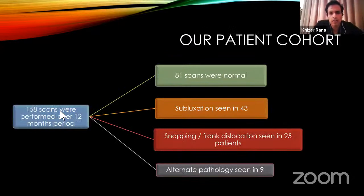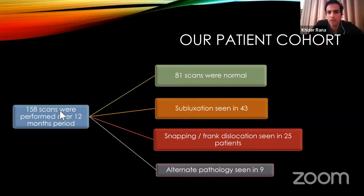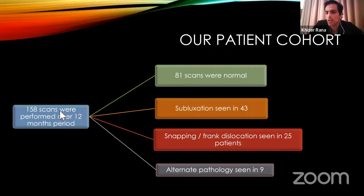In our series of 158 patients scanned from December 2020 to December 2021: 81 scans were normal, 43 showed subluxation without frank dislocation, 25 showed snapping with frank dislocation (some bilateral), and 9 showed alternate pathology directly or indirectly related to the ulnar nerve.